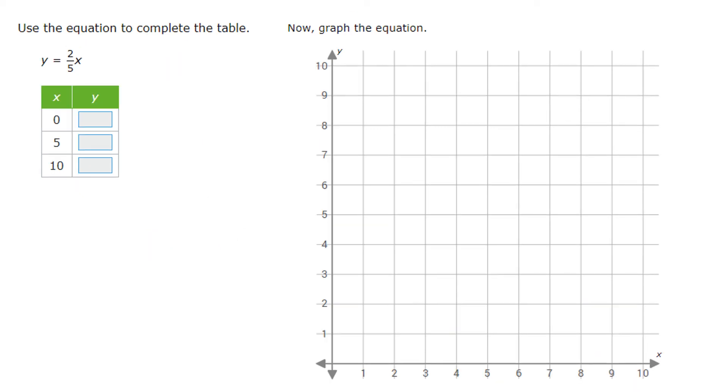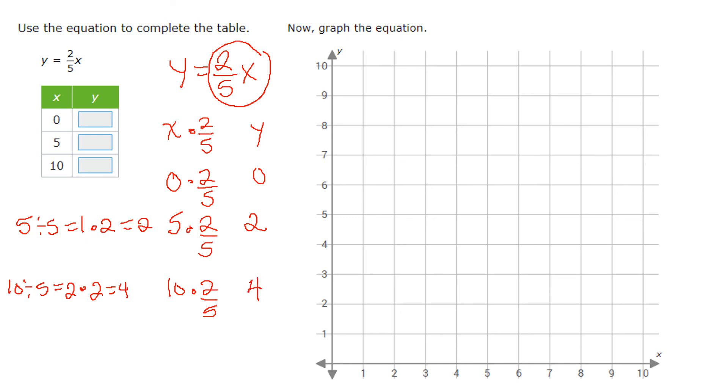So the last scenario, very similar to the one before it, we're told that y equals 2 fifth x. And so all we're going to do is recognize that all of the x's should be multiplied by 2 fifth to get the y value. So x times 2 fifth is going to give me y. So when x is 0, 0 times 2 fifth is still going to be 0 as always. 5 times 2 fifth, again, that would be 5 divided by 5, which is 1. And then 1 multiplied by the numerator, which is 2, gives me 2. So that means y is 2. For 10, same process, 10 times 2 fifth, 10 divided by 5 is 2. 2 times 2 gives me 4. That means that when x is 10, y is 4.